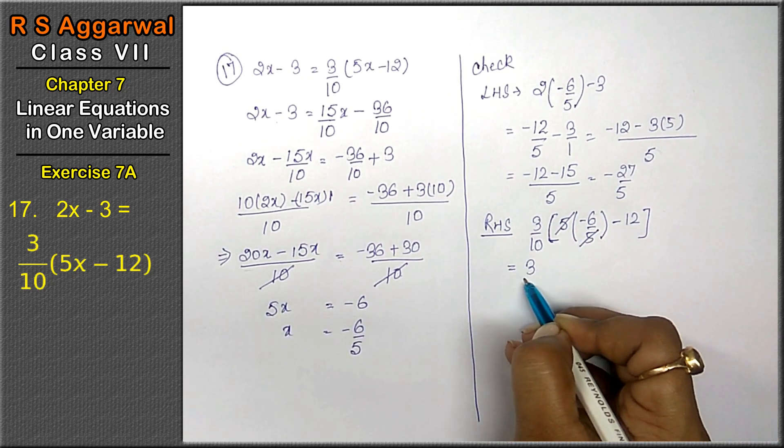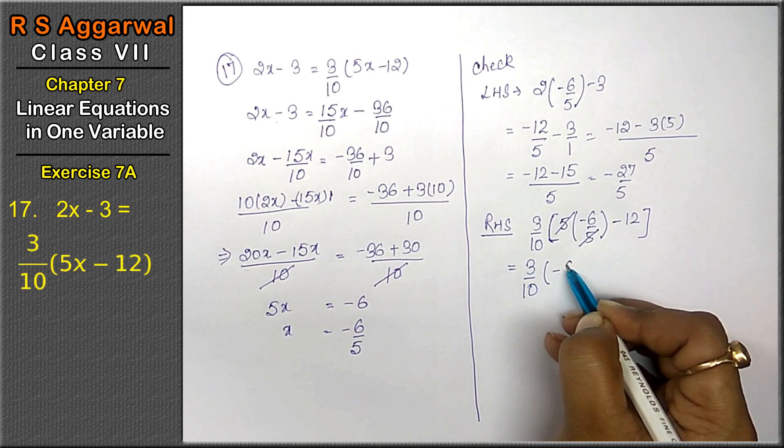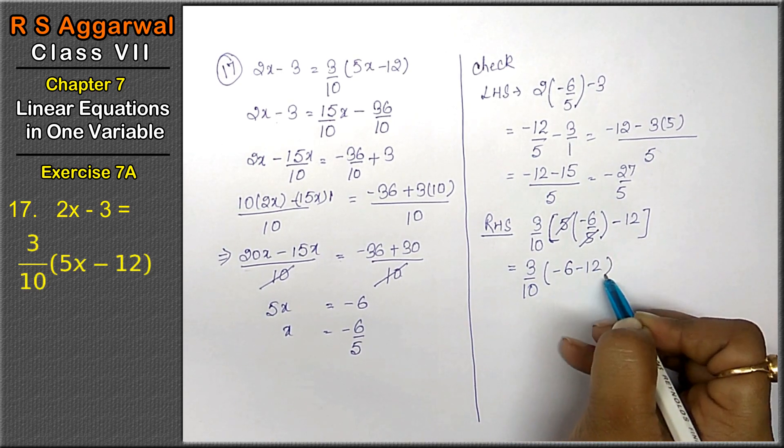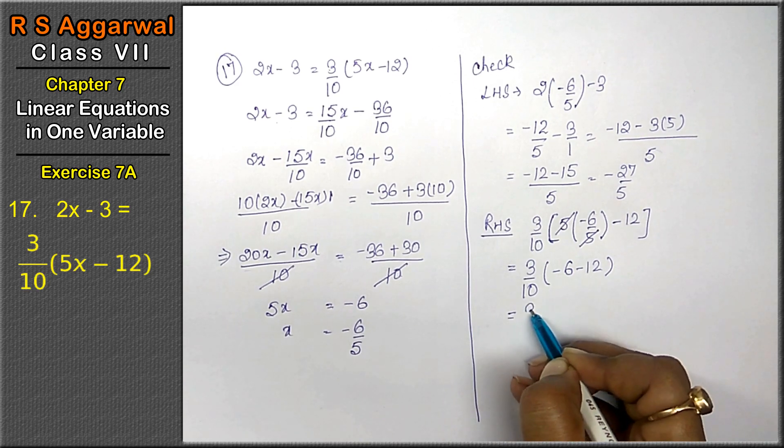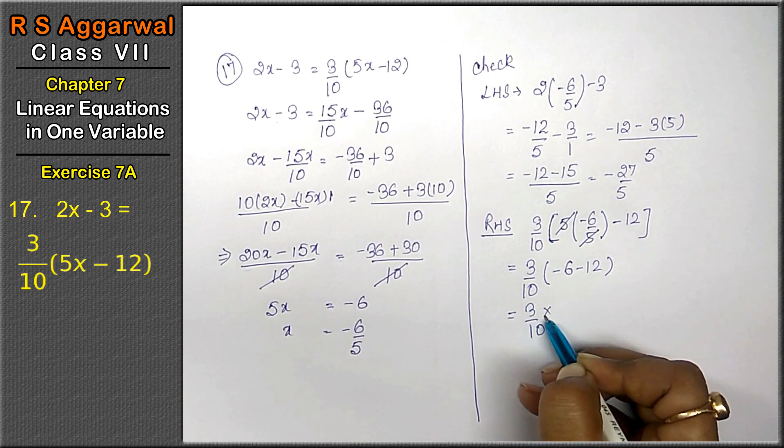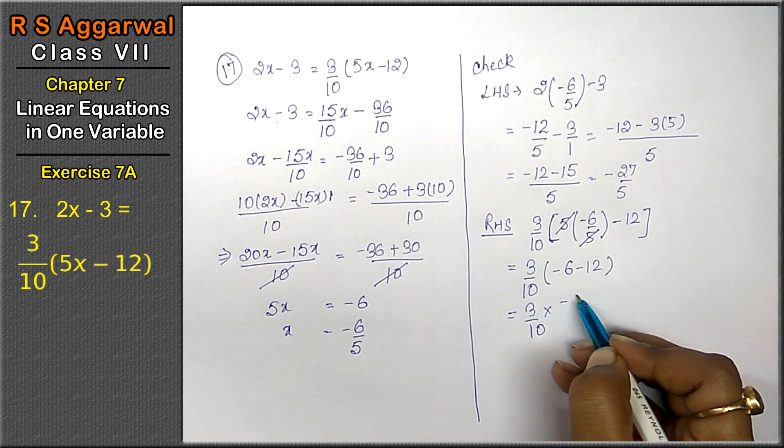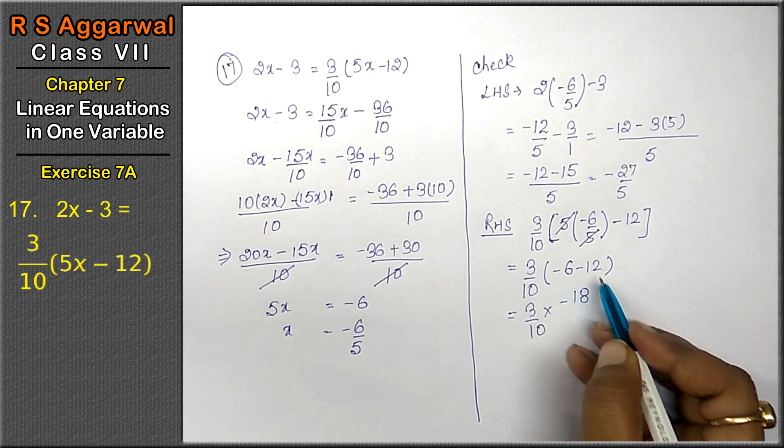That is 3 upon 10 into minus 18. 6 plus 12 is 18.